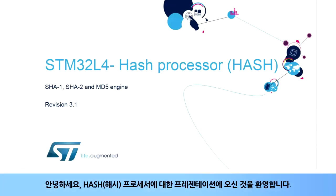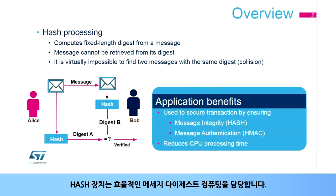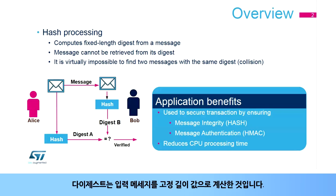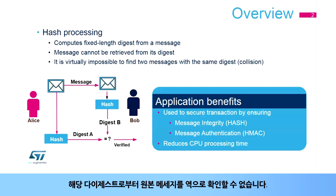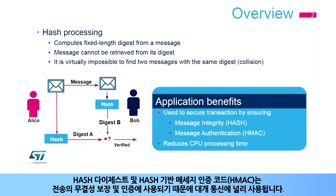Hello, and welcome to this presentation of the Hash Processor. The Hash peripheral is in charge of efficient computing of the message digest. A digest is a fixed length value computed from an input message. A digest is unique — it is virtually impossible to find two messages with the same digest. The original message cannot be retrieved from its digest. Hash digests and hash-based message authentication code, or HMAC, are widely used in communication since they are used to guarantee the integrity and authentication of a transfer.